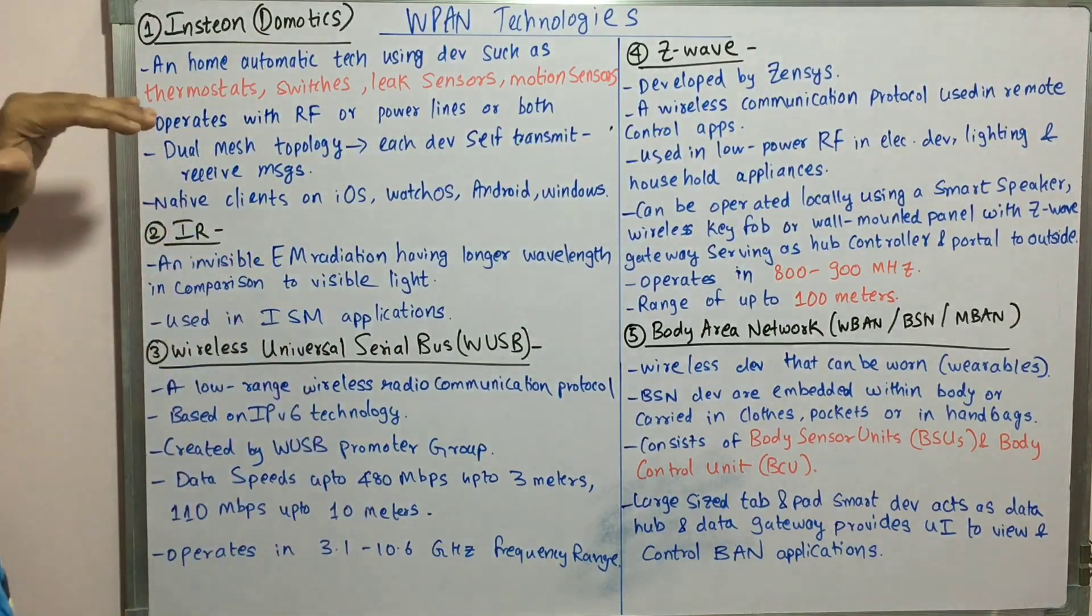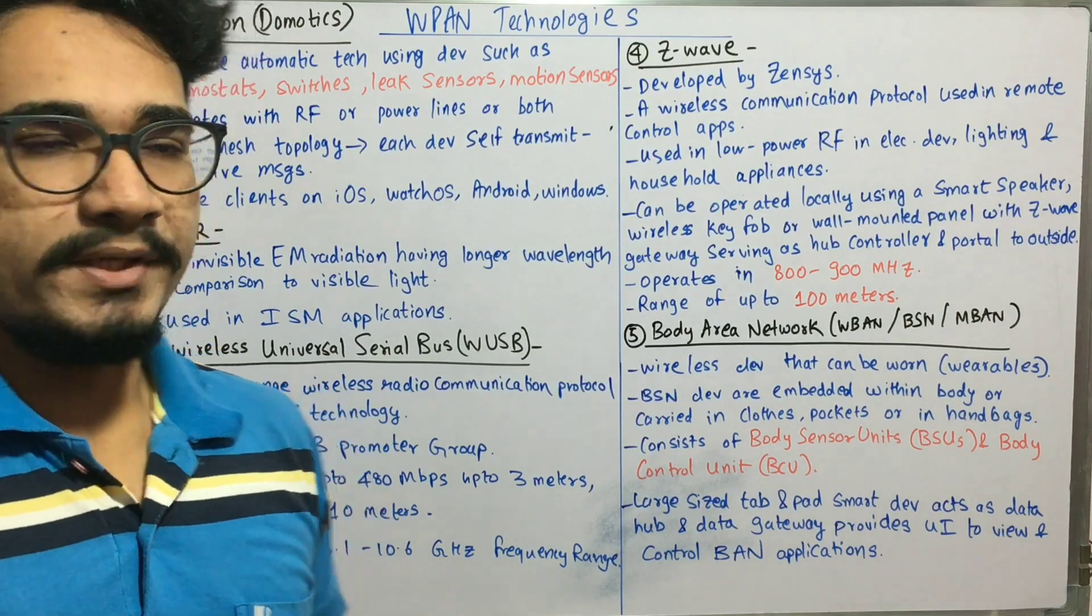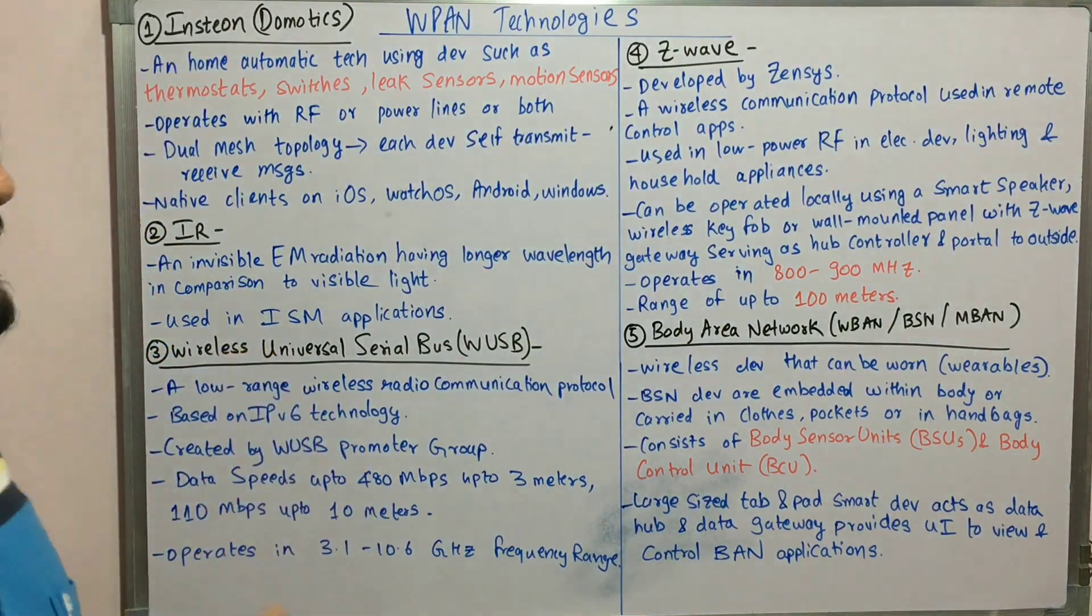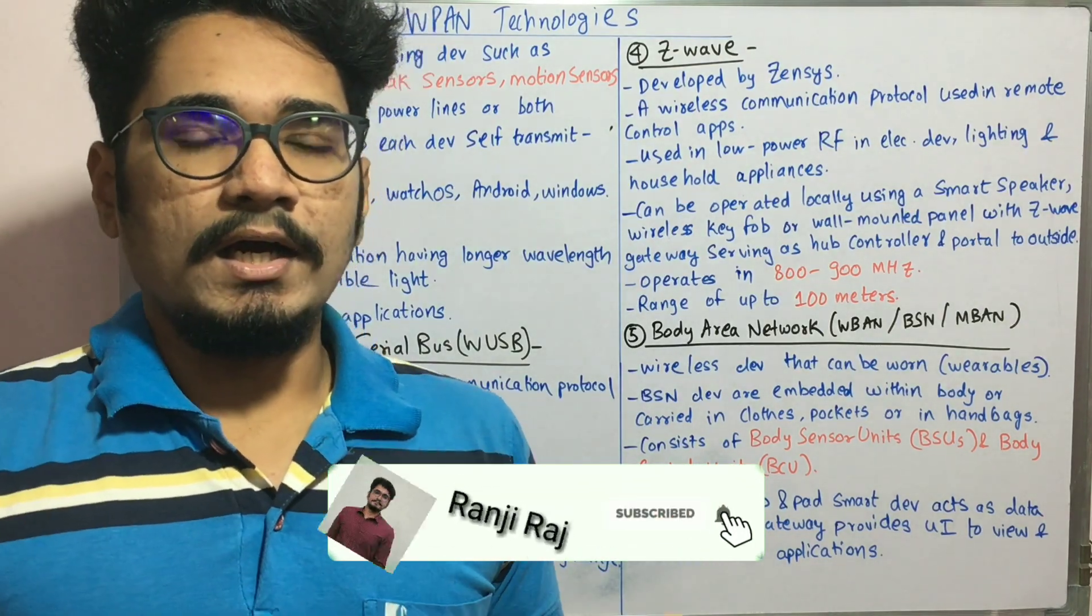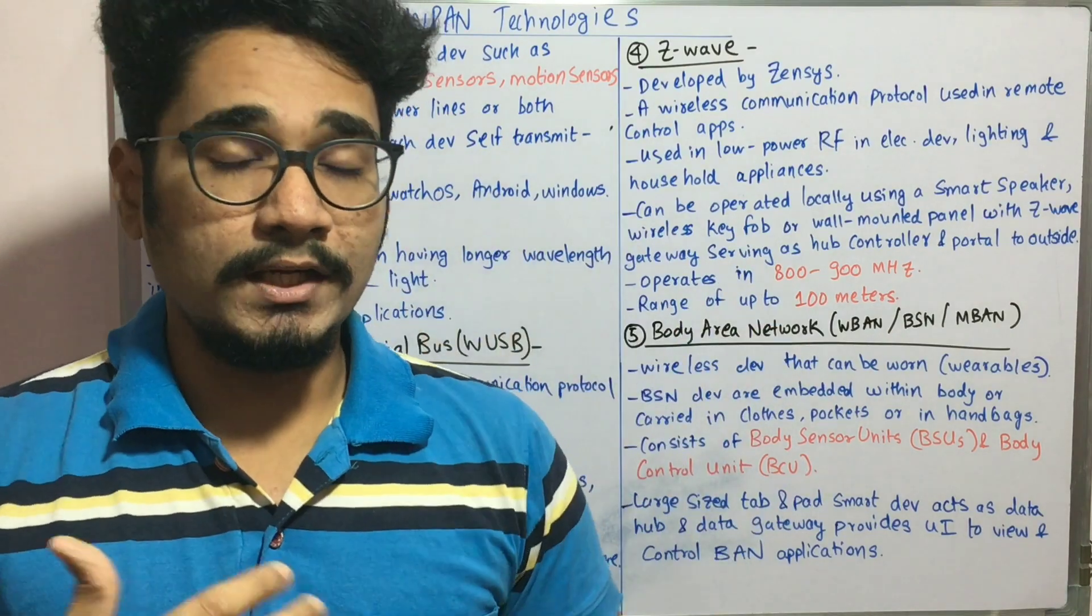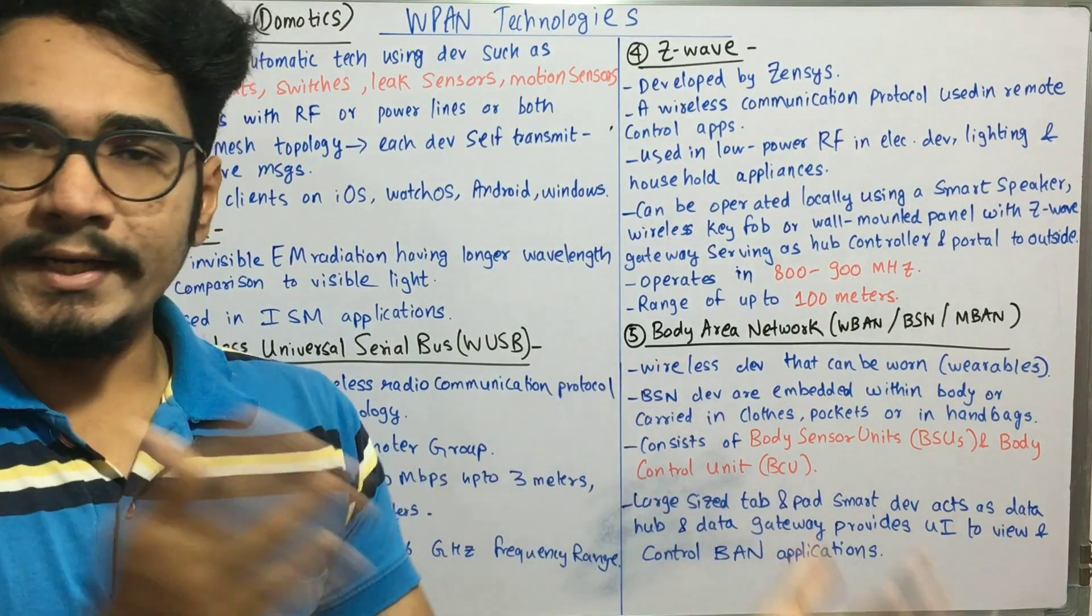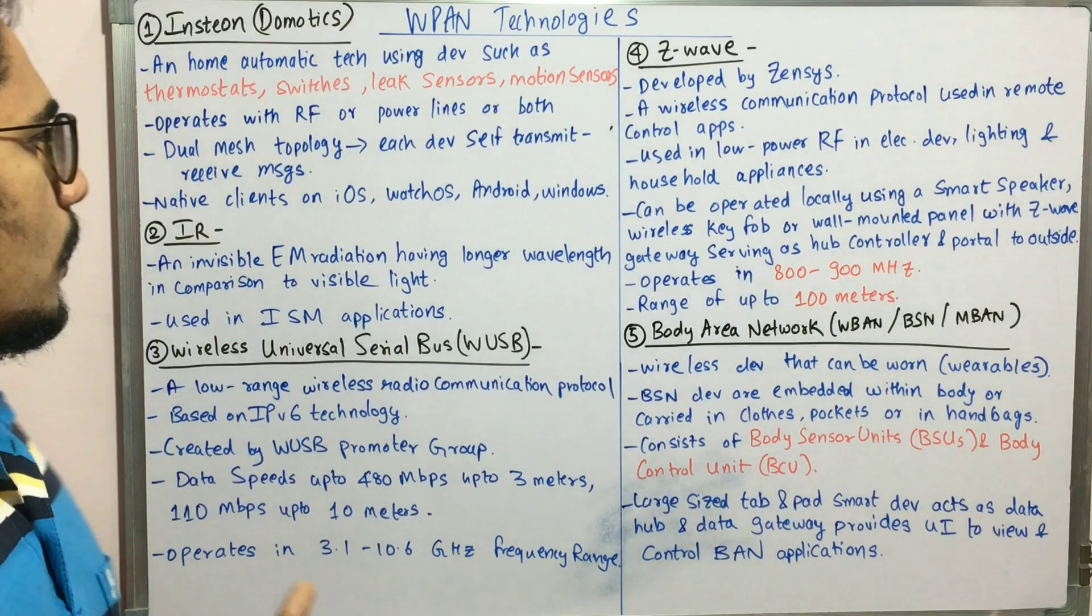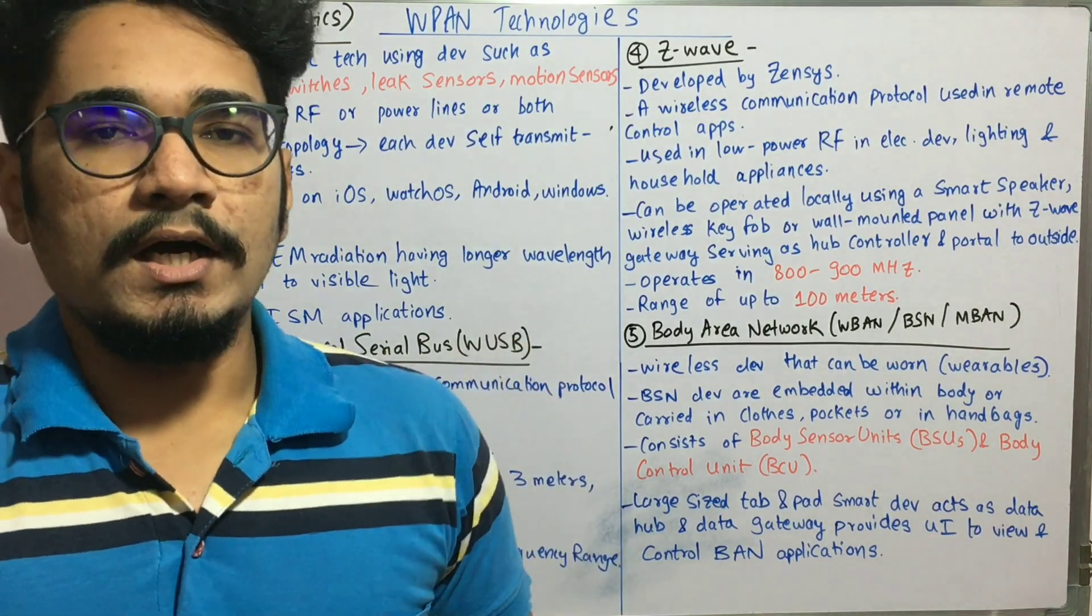The number one technology in WPAN is called Insteon, also called domotics since it's mainly used in home automation systems. It's enabled in devices such as thermostats, switches, leak sensors, and motion sensors. It operates with radio frequency or with power lines, or you can use a combination of both, and it employs something called dual mesh networking topology.